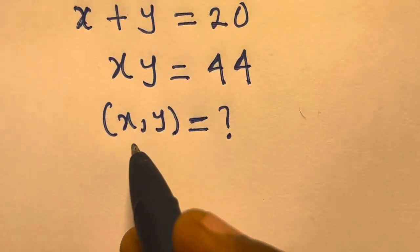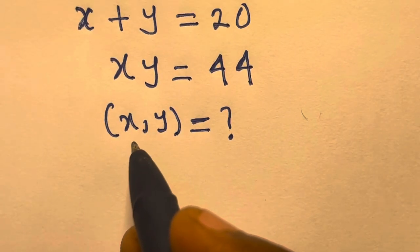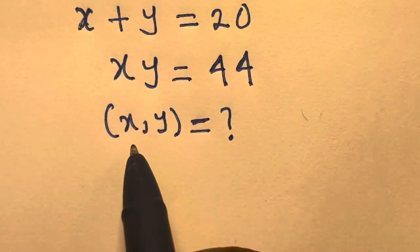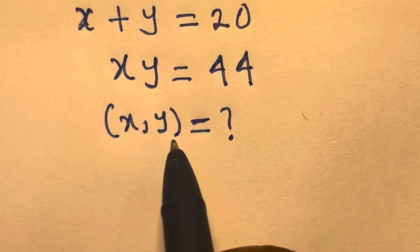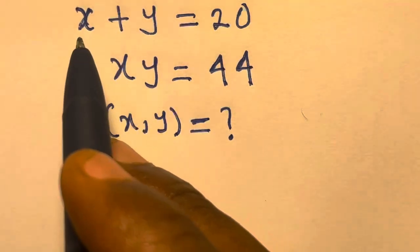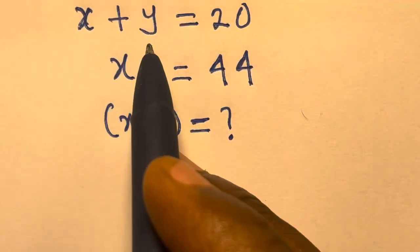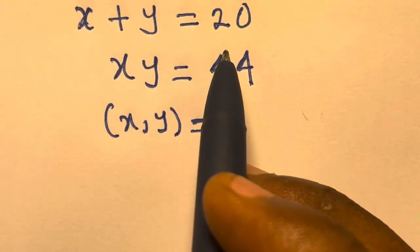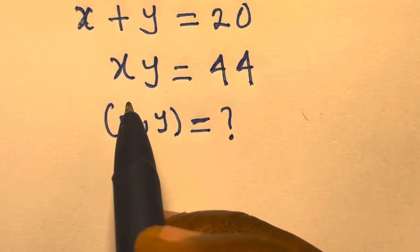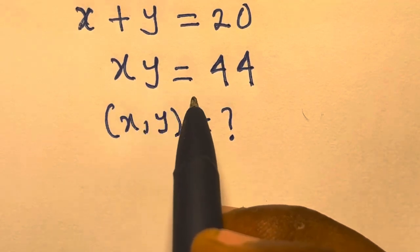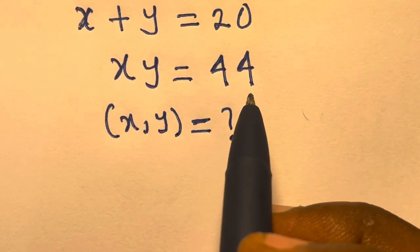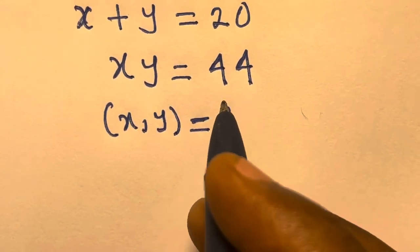Hi, welcome to Mathematics. In this video, we want to solve for x and y in x plus y equals 20 and x times y equals 44. So let's go.